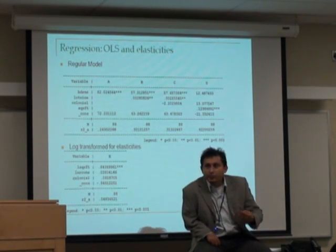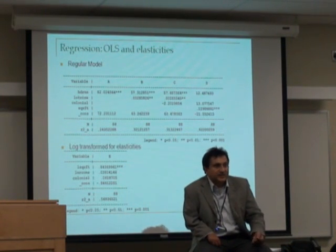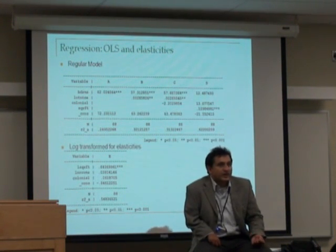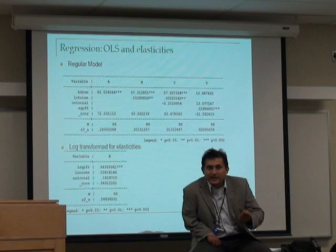we have 0.84 as the elasticity value, which means that a percentage increase in the size of the housing unit results in 0.84% increase in the price of the housing unit. This is inelastic.